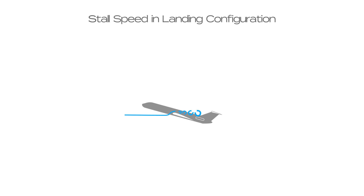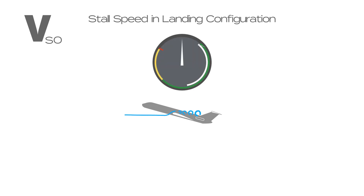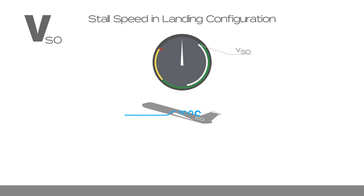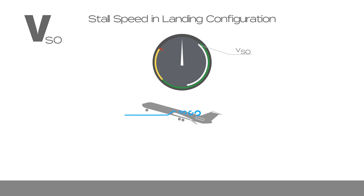Stall speed in landing configuration is represented by VS0. On the airspeed indicator, the lower limit of the white arc indicates this speed. This is the stalling speed, or the minimum steady flight speed at which the aeroplane is controllable in landing configuration. The aeroplane's engines are at idle, propellers are in low pitch, full flaps are usually applied, cow flaps are closed, the centre of gravity is at maximum forward limit and maximum gross landing weight.